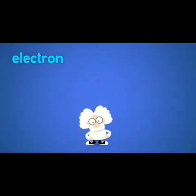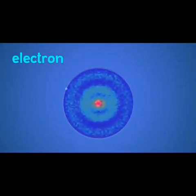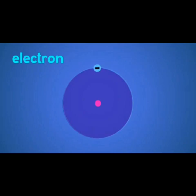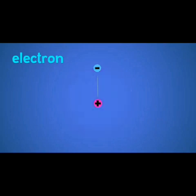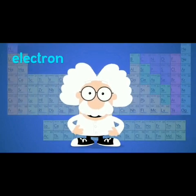Now, electrons are much smaller than protons and they zip around protons at lightning speed, making up something called an electron cloud around the atom. Electrons do this because they have a negative electrical charge, which always pulls towards the proton's positive electrical charge. This pull between the positive protons and the negative electrons is called the electric force, and it's always there. So whenever a free electron gets close enough to a lone proton, they'll become part of the same atom. That is why all elements have the same number of electrons and protons.